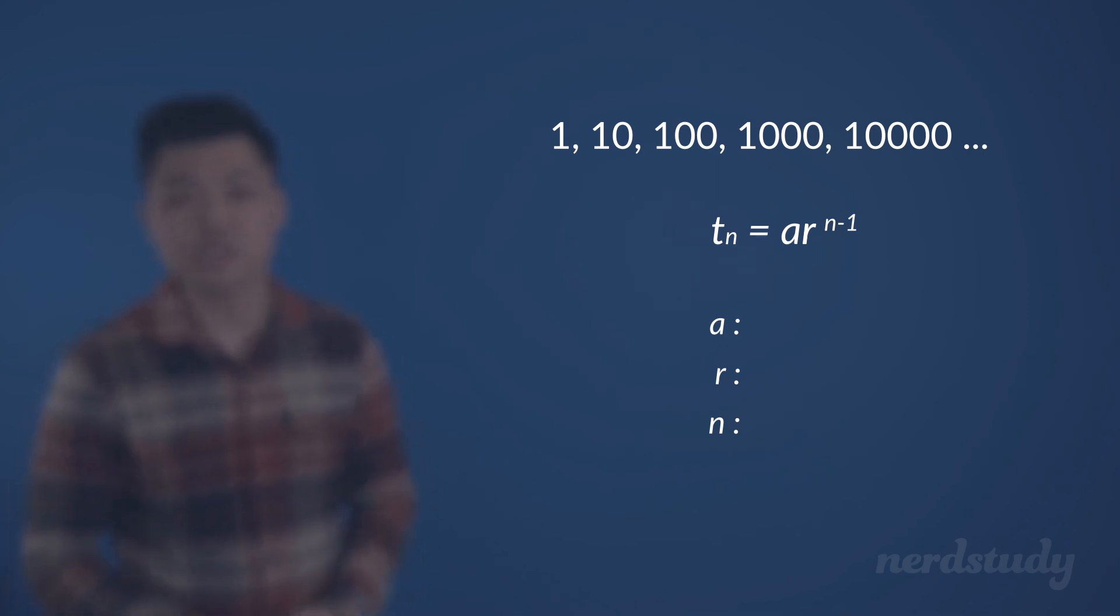If we pay close attention to what is going on here, we can see that when we multiply 1 by 10, we get 10. And when we multiply 10 by 10, we get 100. And when we multiply 100 by 10, we get 1000. And so on and so forth.